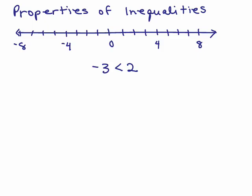We know the properties of equality: you could add, multiply, subtract, or divide any non-zero number and you preserve the equation, meaning you'll have the same solution set. Let's see what happens here if we add some number to both sides. Let's say we're going to add 5 to both sides — what would happen?